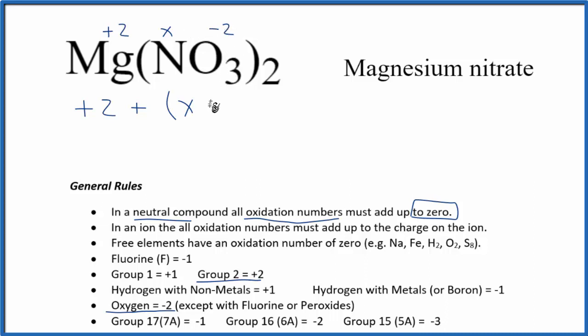So this -2 times 3 is -6, and then I have 2 of these nitrate ions, so I need to put a 2 out here, and it equals zero.